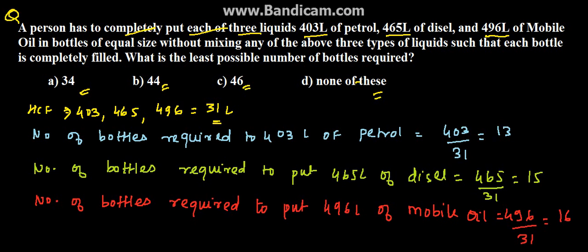So from here, we can derive the least number of bottles required having 31 liters capacity: 13 plus 15 plus 16, which is equal to 44.